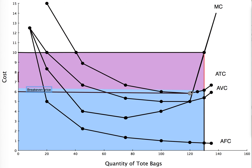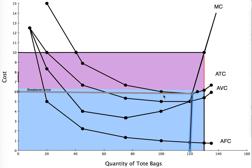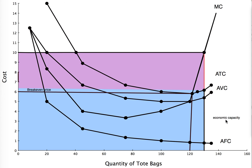The quantity associated with the break-even price is also an important number. It is what is called economic capacity — the quantity at which our business is the most efficient. It is the point at which we have minimized our average total cost. Economic capacity happens at about 80% of your physical capacity, and it occurs at your minimum average total cost and at your break-even price.